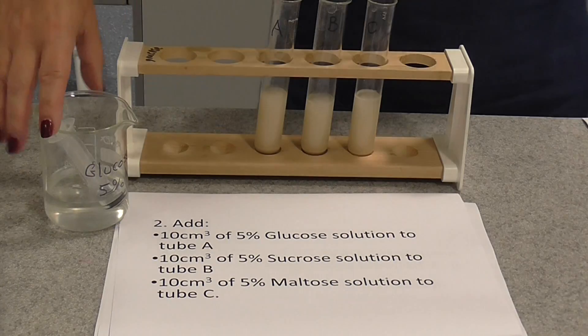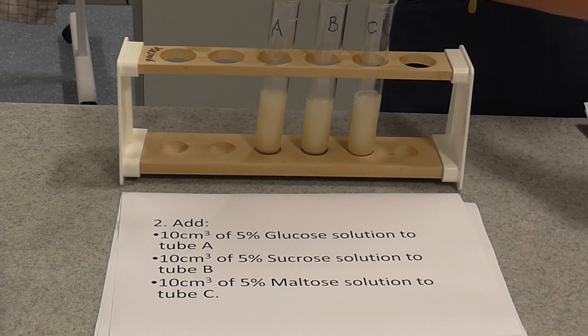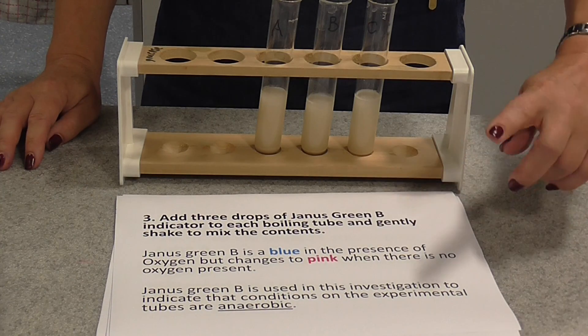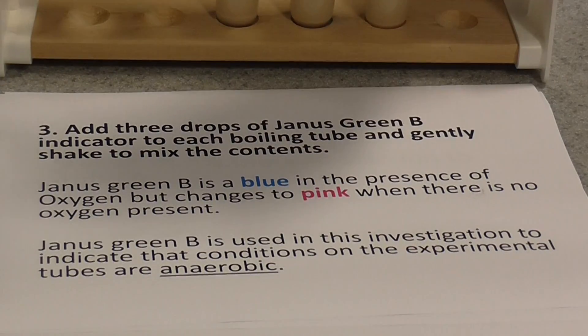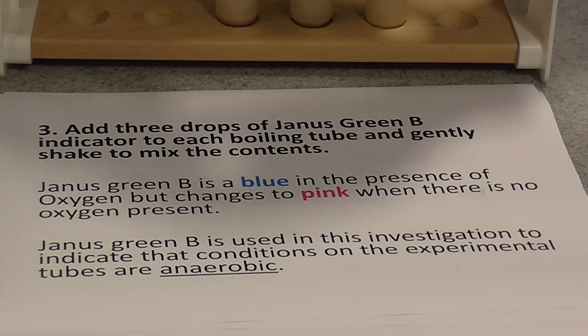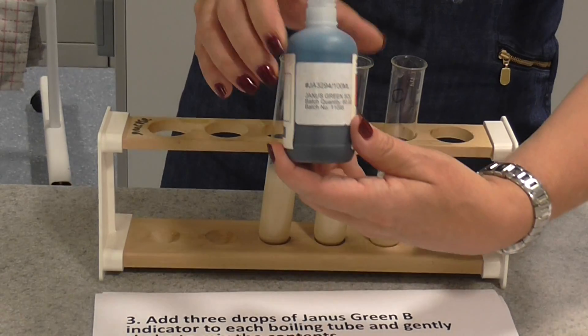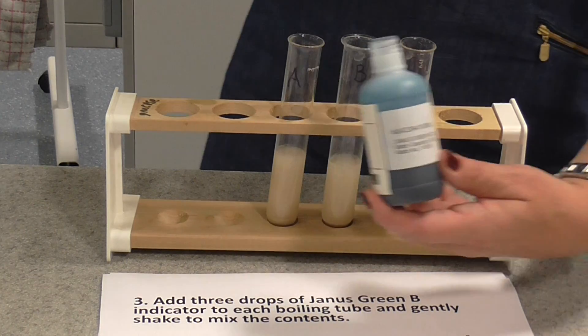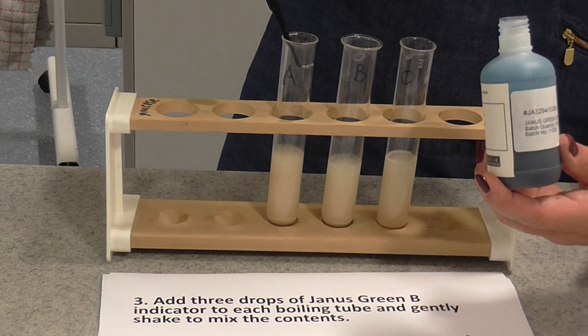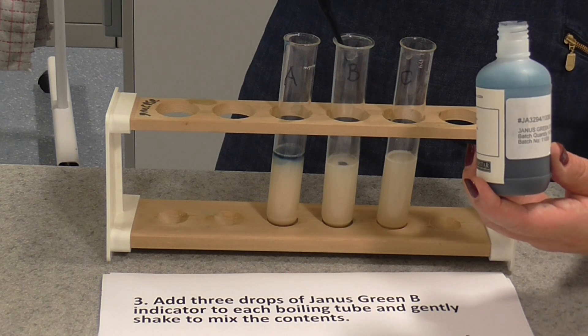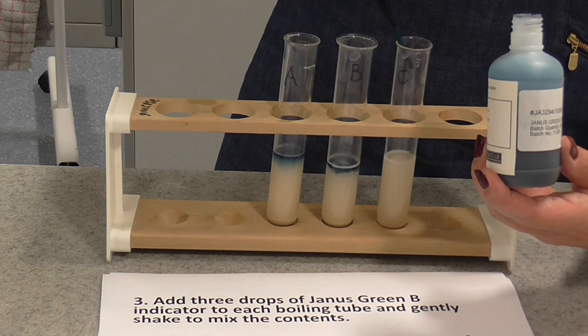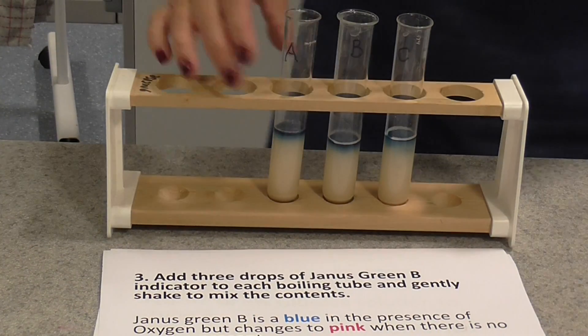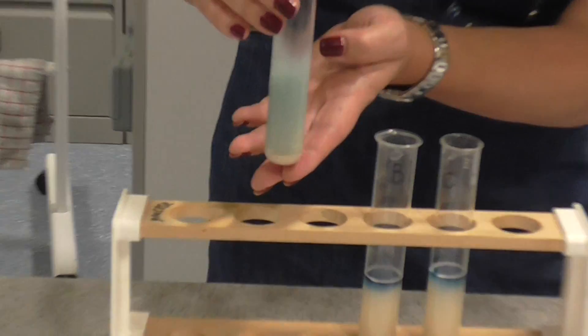Now the next step, we're going to add an indicator called Janus Green, Janus Green B. And all we're going to do is use a dropper to put three drops of this indicator. It is actually a kind of bluey green color. It's more blue in my mind. So about three drops of that to each of your tubes. And at this stage you need to give each tube a little shake to mix the contents.